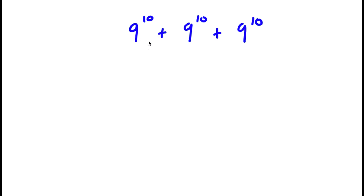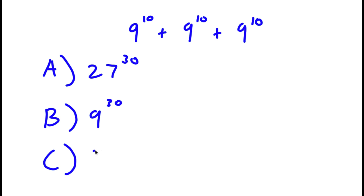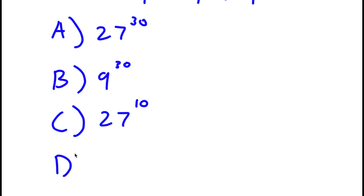In this problem, I have 9 to the power of 10 plus 9 to the power of 10 plus 9 to the power of 10, and I have four answer choices. Answer choice A is 27 to the power of 30. Answer choice B is 9 to the power of 30. Answer choice C is 27 to the power of 10. And answer choice D is 3 to the power of 21.